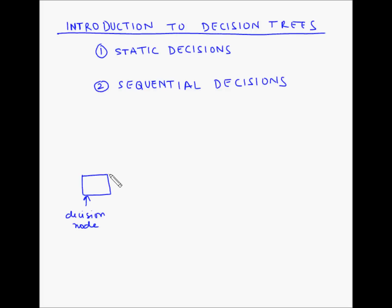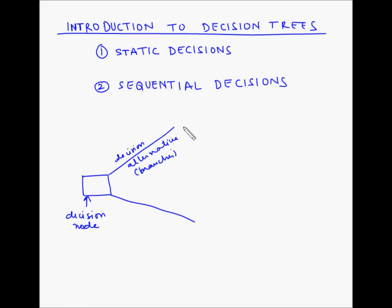So let us say these are the two decision alternatives or branches. Now each decision alternative may have multiple outcomes. These outcomes emerge from the event nodes and these event nodes are depicted as a circle.